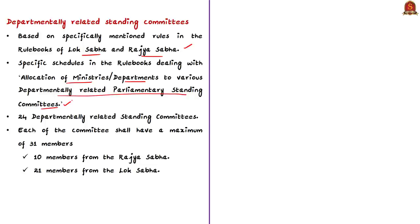The chairman of Rajya Sabha and the speaker of Lok Sabha may alter these schedules pertaining to departmental standing committees from time to time in consultation with each other. At present there are 24 department-related standing committees in parliament. Each committee will have a set of related ministries and departments. Each committee shall have a maximum of 31 members — 10 nominated by the chairman of Rajya Sabha and the remaining 21 nominated by the speaker of Lok Sabha — and the committee has to examine and report on bills pertaining to the related ministries.